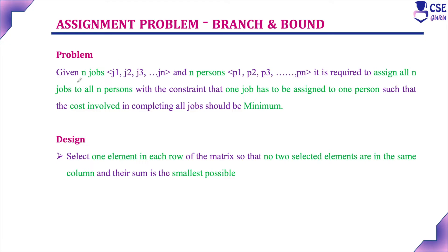What is the assignment problem? Given N jobs — job 1, job 2, job 3 up to job N — and N persons P1, P2, P3 up to PN, it is required to assign all N jobs to all N persons with the constraint that only one job is assigned to one person. We need to assign jobs such that the cost involved in completing all the jobs is minimum.